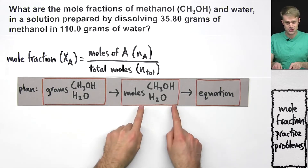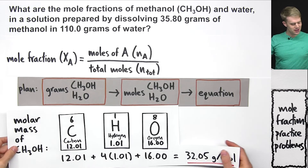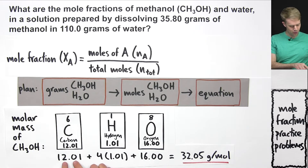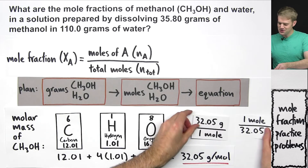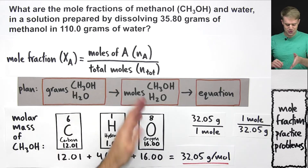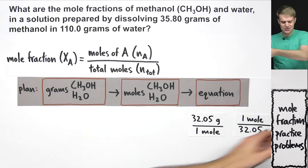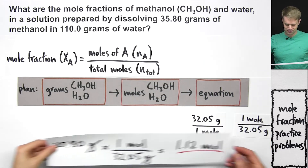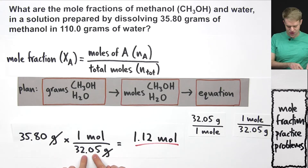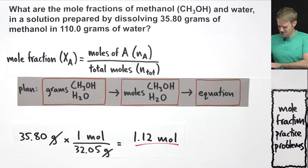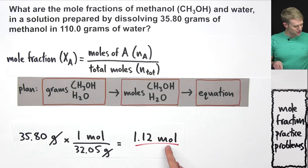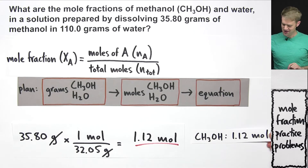Let's start with methanol. To go from grams to moles, we need the molar mass. Methanol, CH3OH, has one carbon, four hydrogens, and one oxygen, giving a molar mass of 32.05 grams per mole. We take the 35.80 grams of methanol and multiply by the conversion factor so that grams cancel out, giving us 1.12 moles of methanol.